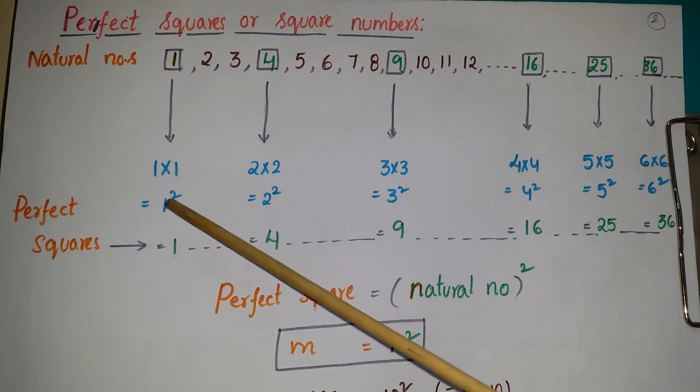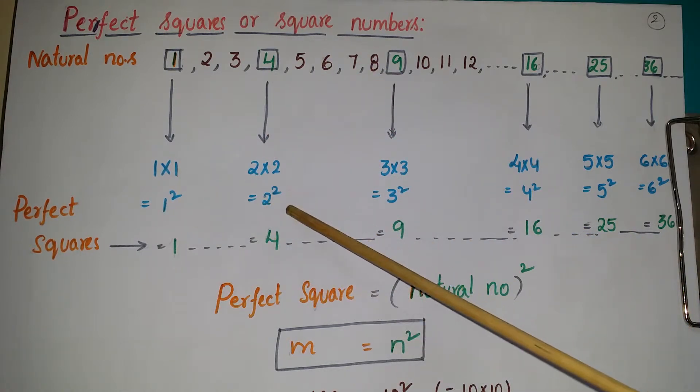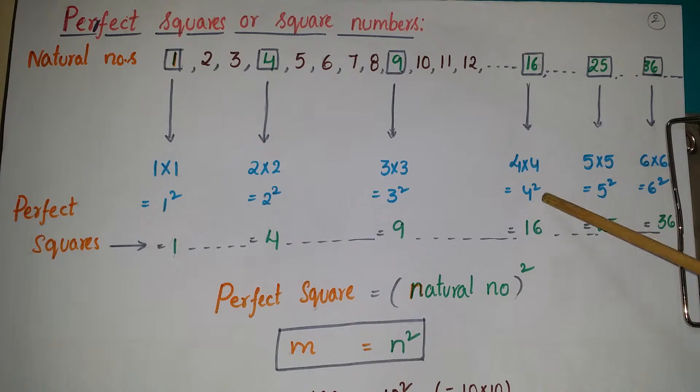These perfect squares we can write as 1 square, see here 2 square, 3 square, 4 square, 5 square, etc. So here 1, 4, 9, 16, 25, 36 are called perfect squares.